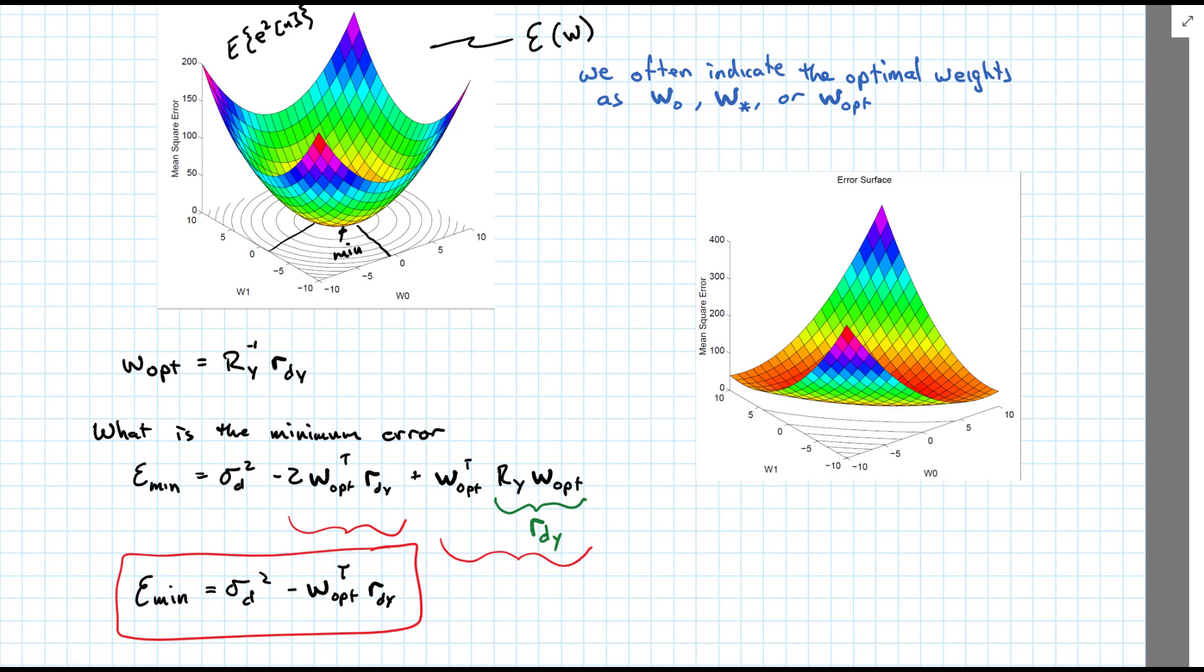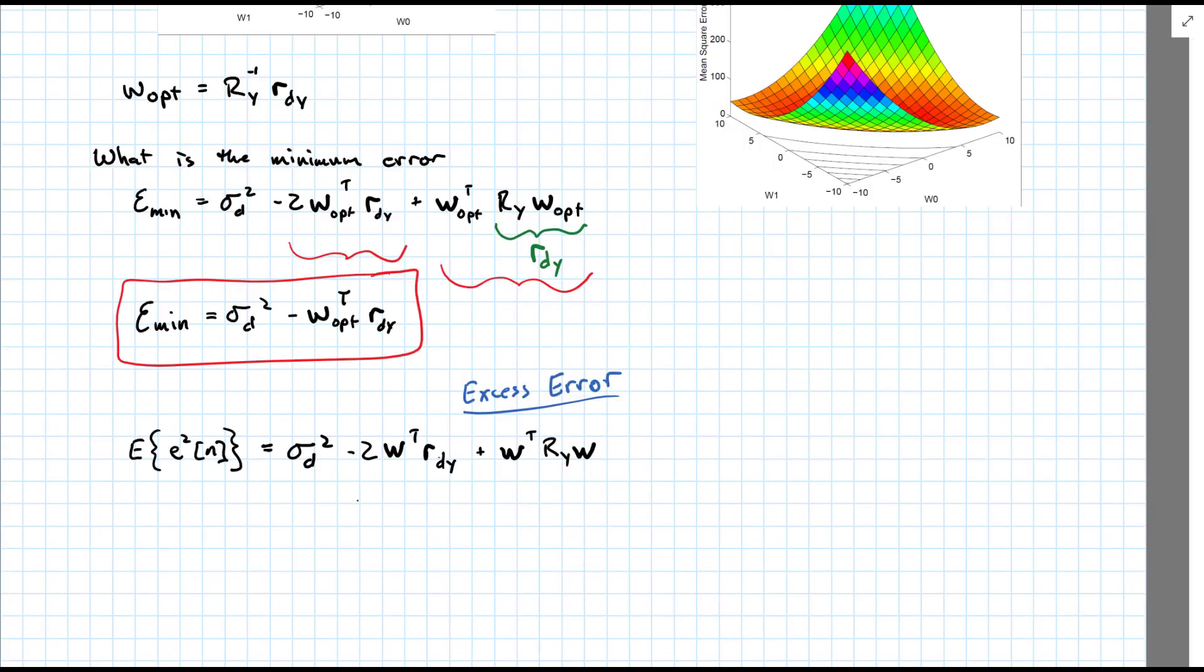we will see this when we start looking at ways of approximating or finding solutions. That the one on the left, where it's very bowl shaped, is much better behaved. Because the minimum stands out dramatically. The one on the right, as you can see, there are a lot of areas where we're close to the minimum, but not exactly there.